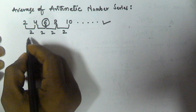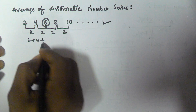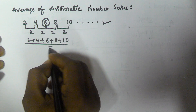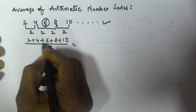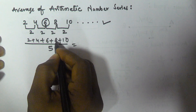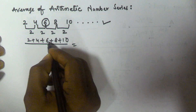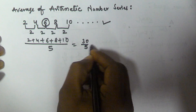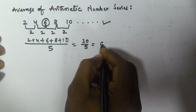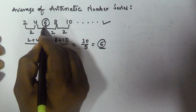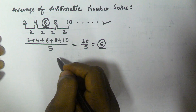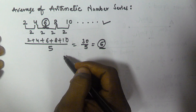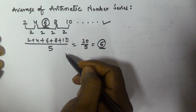Let us check that. So 2 plus 4 plus 6 plus 8 plus 10 divided by 5. That gives us 2, 4, 6, then 12 plus 8 is 20, and 20 plus 10 is 30, divided by 5. 30 divided by 5 is equal to 6, which is the middle number. So the average of an arithmetic number series is always going to be the middle number of the given series.